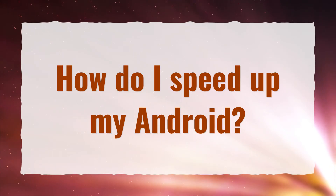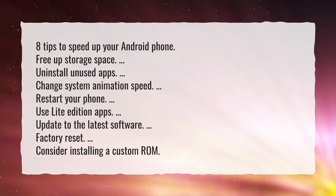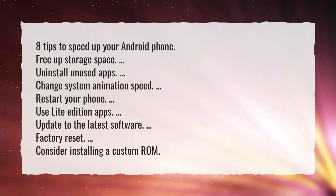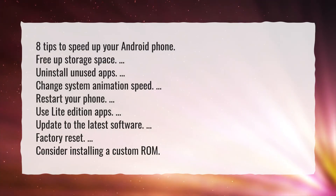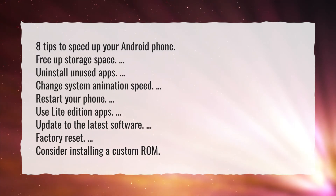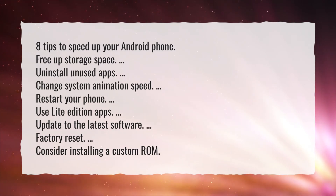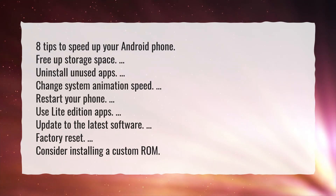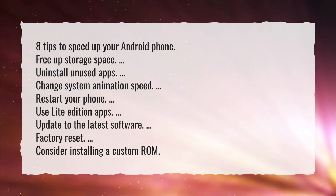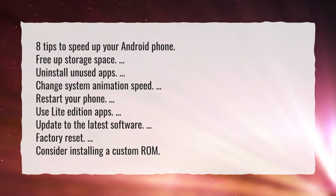How do I speed up my Android? Eight tips to speed up your Android phone: free up storage space, uninstall unused apps, change system animation speed, restart your phone, use light edition apps, update to the latest software, factory reset, and consider installing a custom ROM.